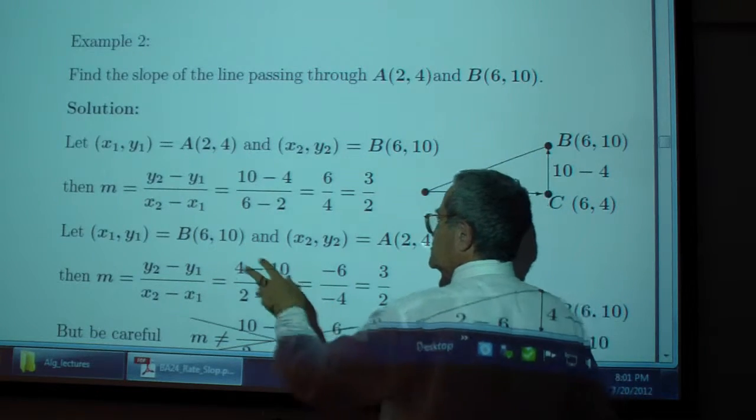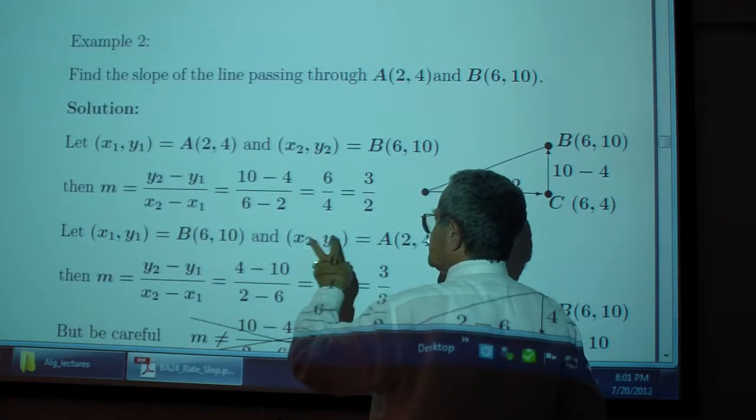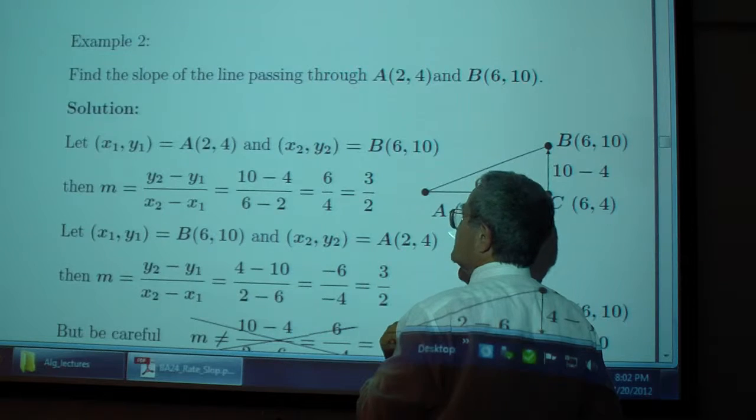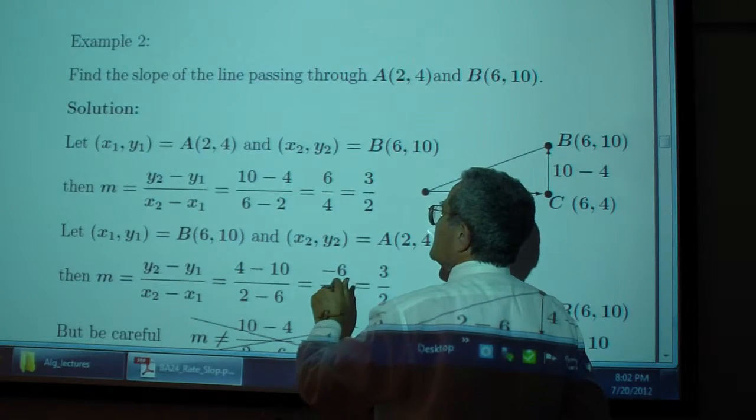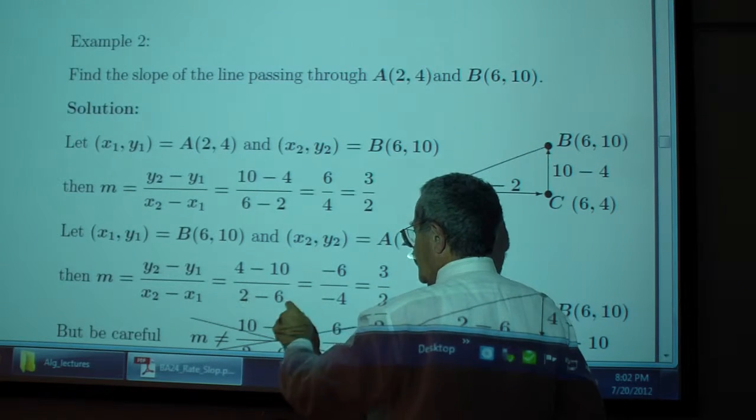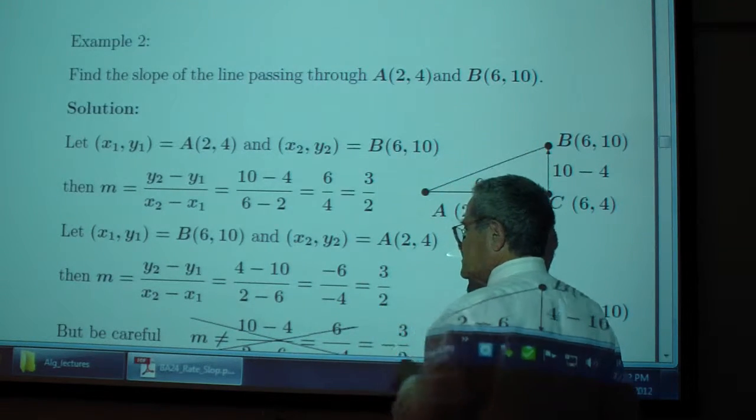Or if I change the roles of x sub 1, y sub 1, and x sub 2, y sub 2, then instead of 10 minus 4, I get 4 minus 10, and instead of 6 minus 2, I get 2 minus 6, which is the same result.